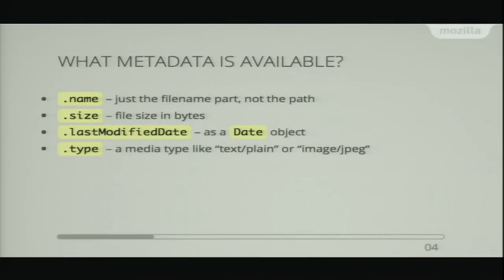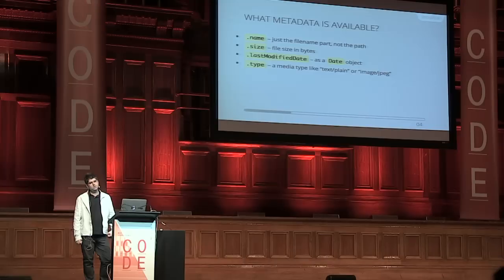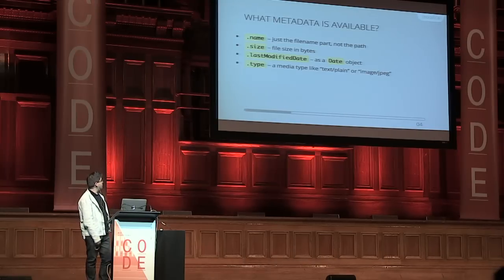As well as the name and the size, you've also got access to the last modified time of the file, and that's exposed as a JavaScript Date object. And also the type of the file — the browser will make some guess based on the file name extension and turn that into a MIME type string for you.